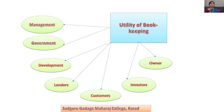Next is utility to customers: customers can easily understand the financial position of the business and can be assured about supply of goods. Next is utility to government: government can easily find out different types of taxes due from various sources. Next is lenders: money lenders can find out the financial standing of the enterprise to decide whether to lend money or not.